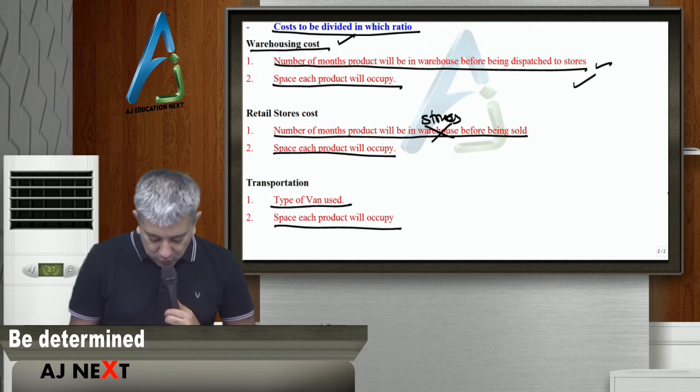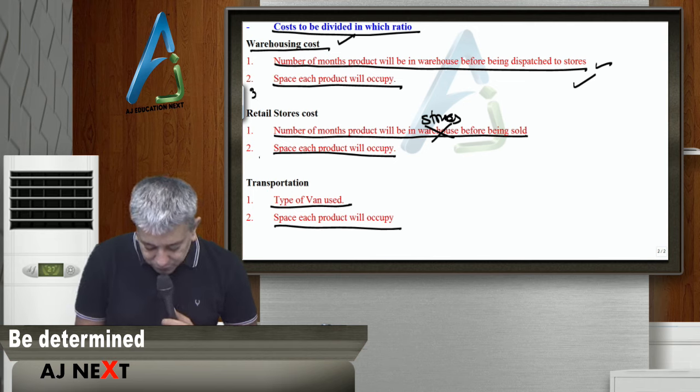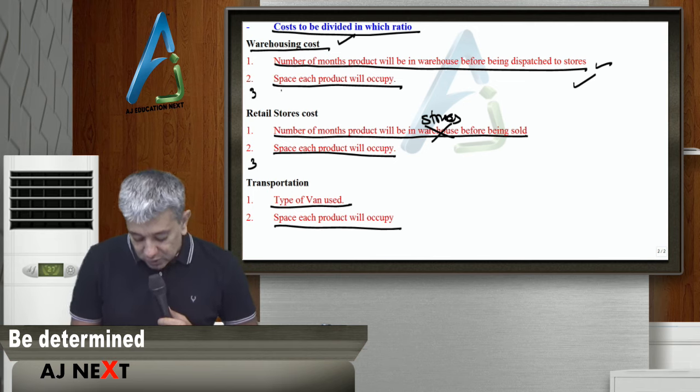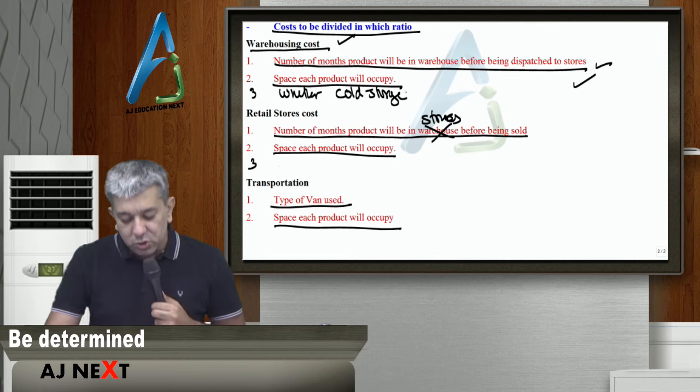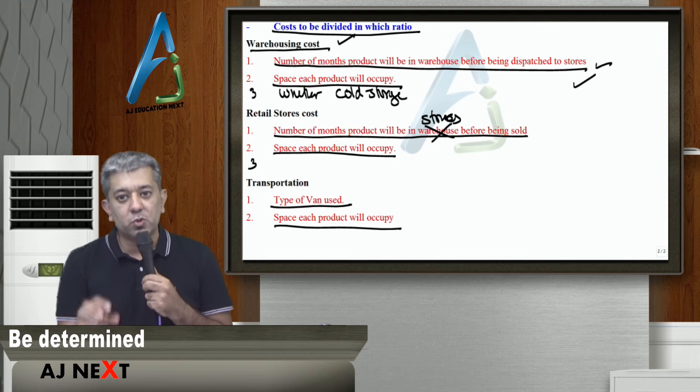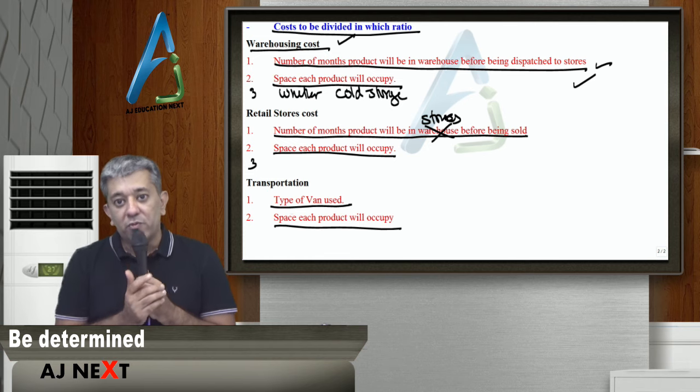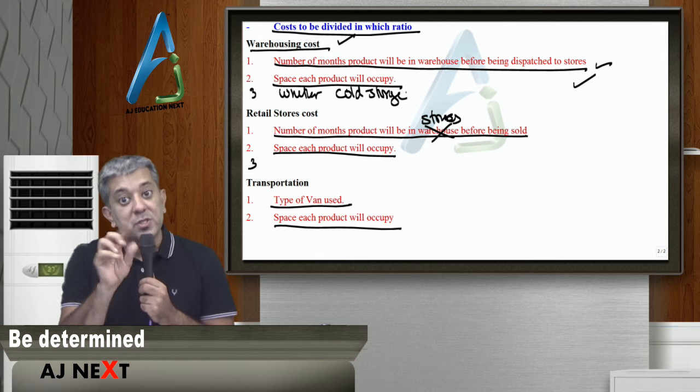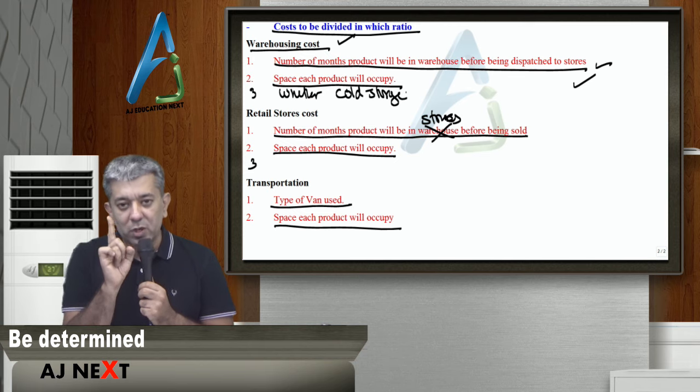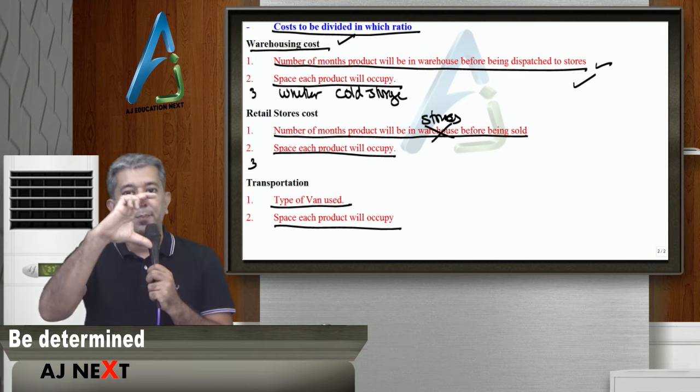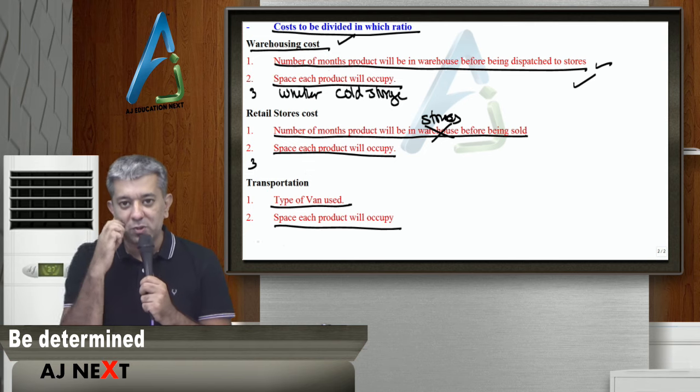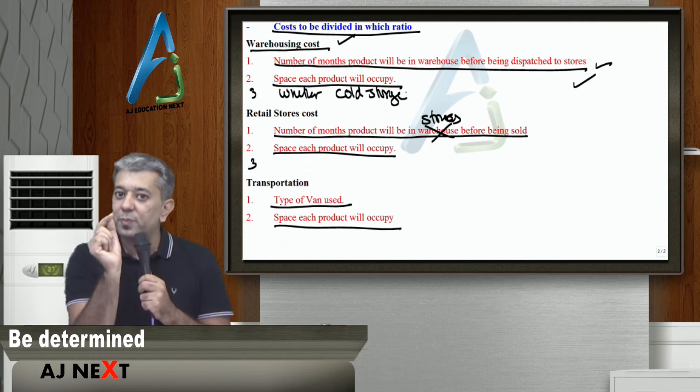Agar chaho, toh, yahan par bhi, point number three ke andar. Likh sakte ho, in this particular case, whether, the product will require cold storage or not. Zara socho, agar woh cold storage hai. Example ke tor pe, agar suppose, koi DMART company hai, wo log paneer bhi bechta hai, biscuits bhi bechta hai. Suppose, dono ka jo dabba hai, bilkul same hai. Dabba jo hai bilkul same hai. But, paneer should be charged more cost. Why? Uske liye cold storage lagega boss. Biscuits ke liye toh nahi lagega.